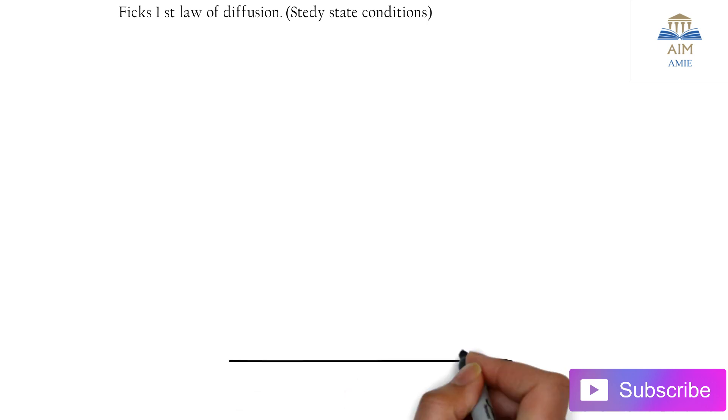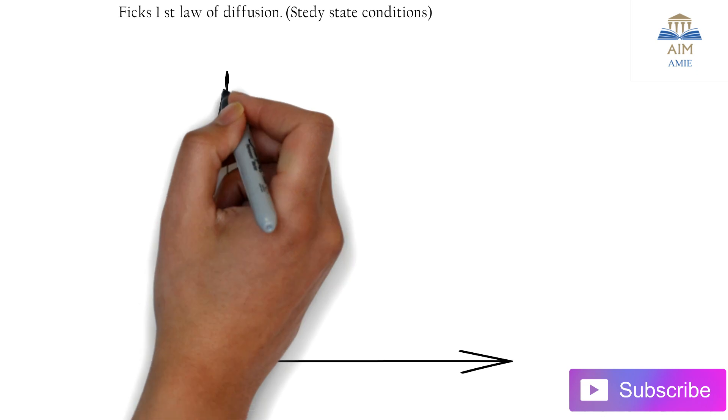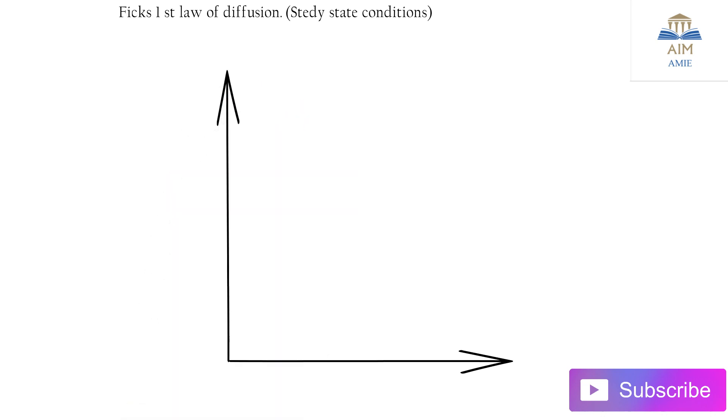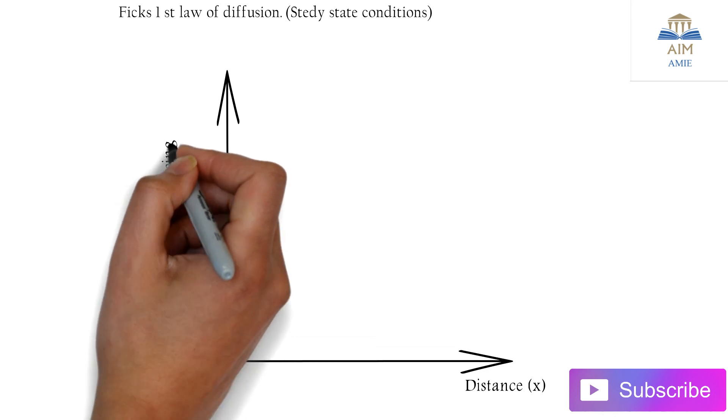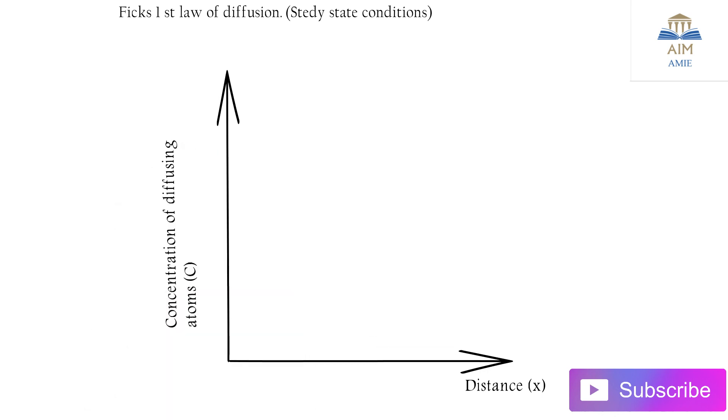I am having over here X-axis and Y-axis. The X-axis denotes the distance measured in X, whereas Y-axis denotes the concentration of diffusing atoms, that is C.